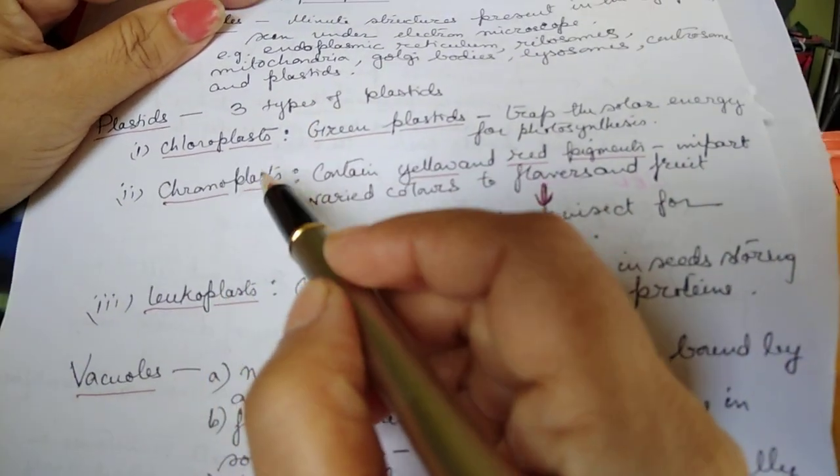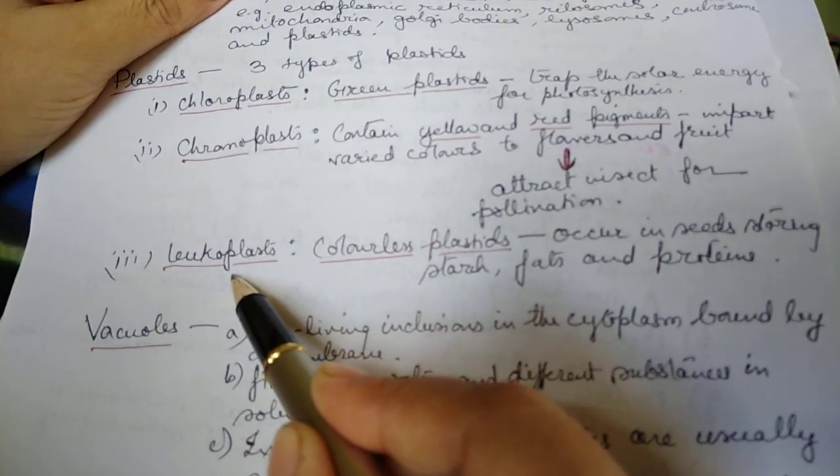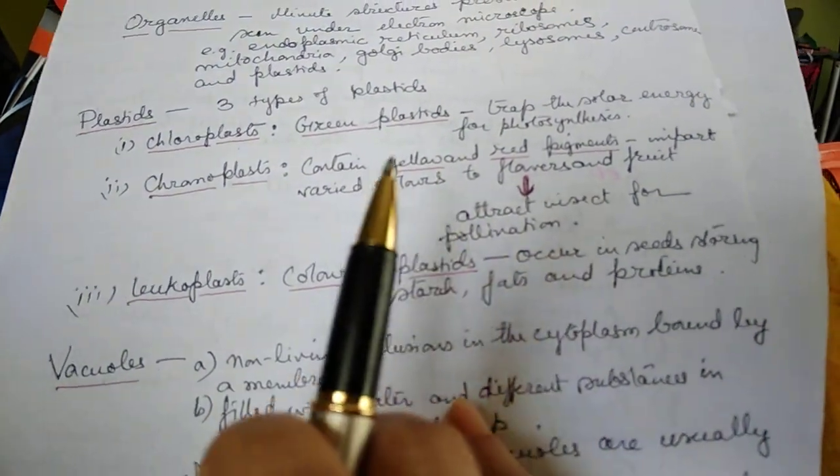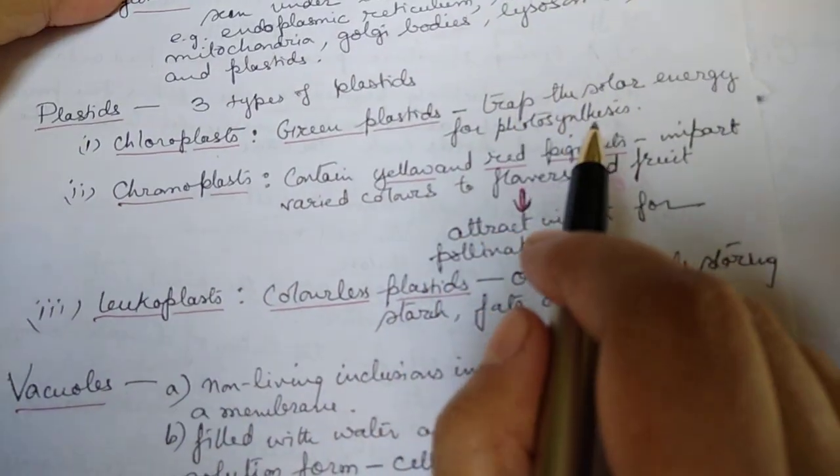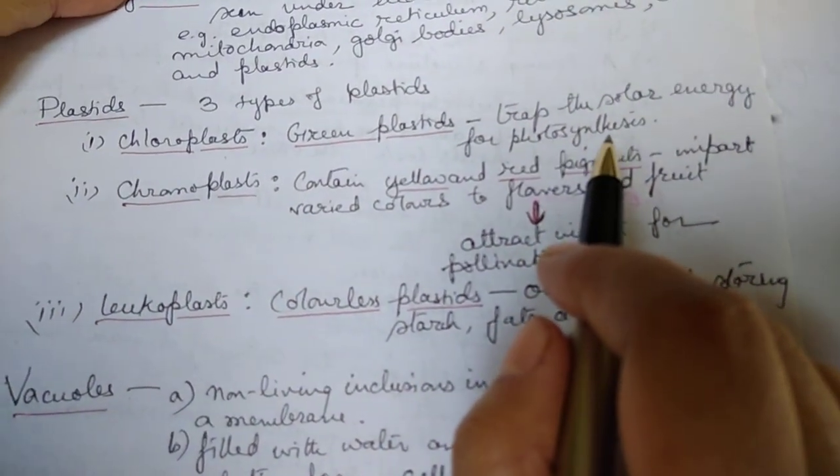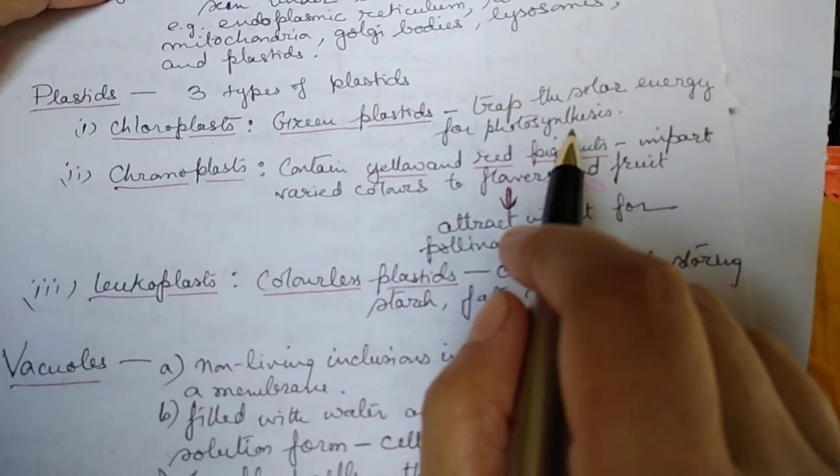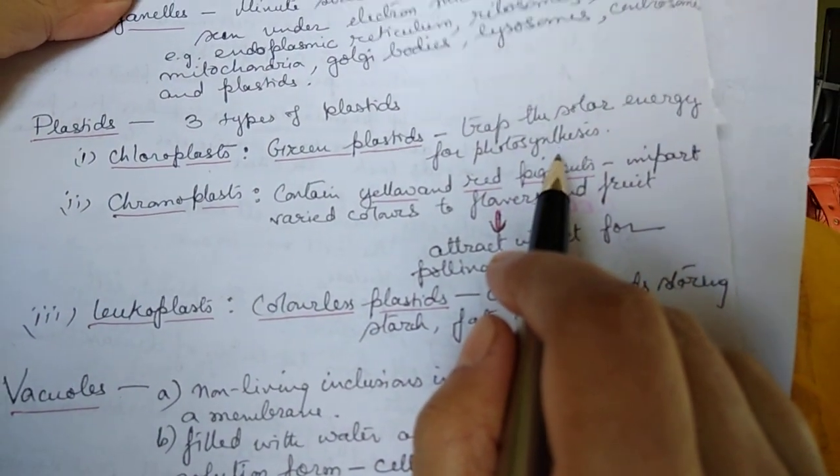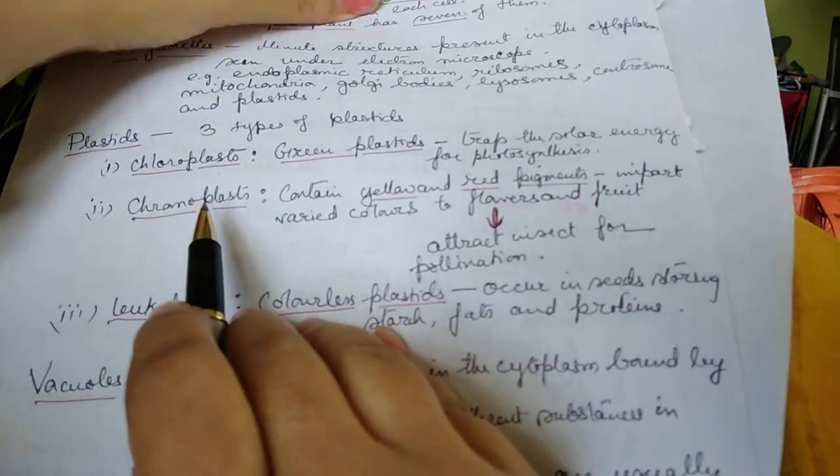Plastids are of three types: one is chloroplast, chromoplast and leucoplast. Chloroplasts, these are green plastids. They trap solar energy for photosynthesis. We know plants manufacture food by the process of photosynthesis, for which they have to trap solar energy which is done by the green plastids, that is the chloroplasts present in the cell.